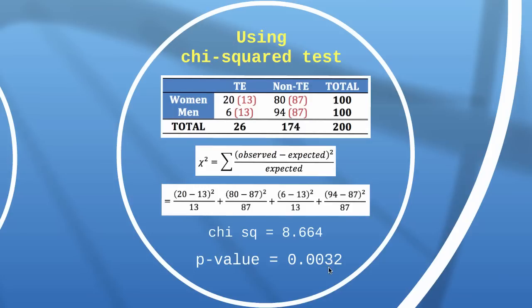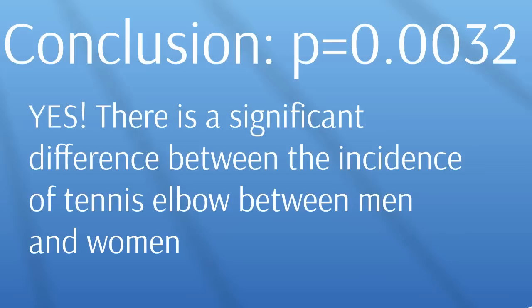The p-value for a chi-squared statistic of 8.664 is 0.0032. No surprise, it's exactly the same as for the z-test. Our conclusion is that there is a significant difference between the incidence of tennis elbow in men and women, because our p-value is extremely small. At any level of significance, 99% or 95%, we would be rejecting the null hypothesis. Our sample was just too extreme to realistically hold on to that hypothesis that there was no difference in the population.